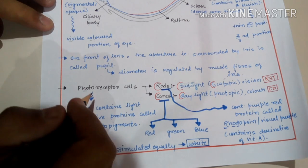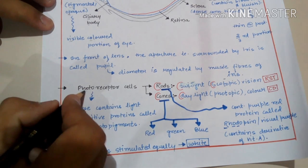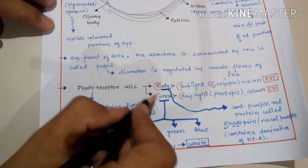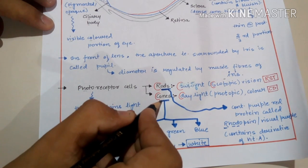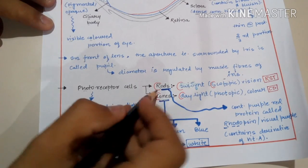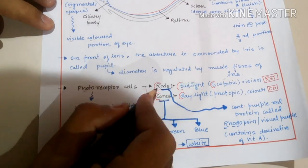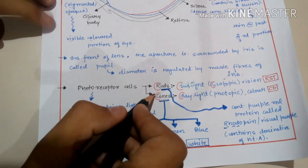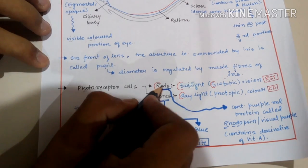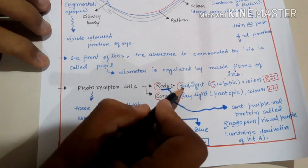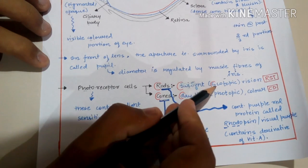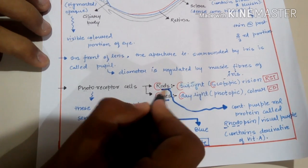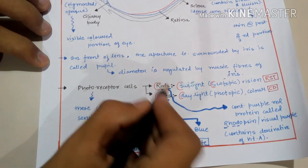The photoreceptor cell layer contains two kinds of cells: cone cells and rod cells. Cone cells are present in the fovea region. There are two types of photoreceptor cells — rod cells and cone cells. When we want to see a particular thing at night, which is also known as twilight or scotopic vision, the rod cells function for visual properties.